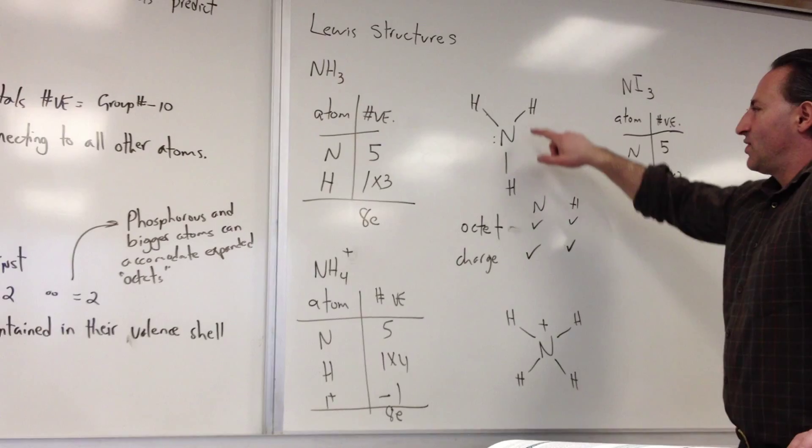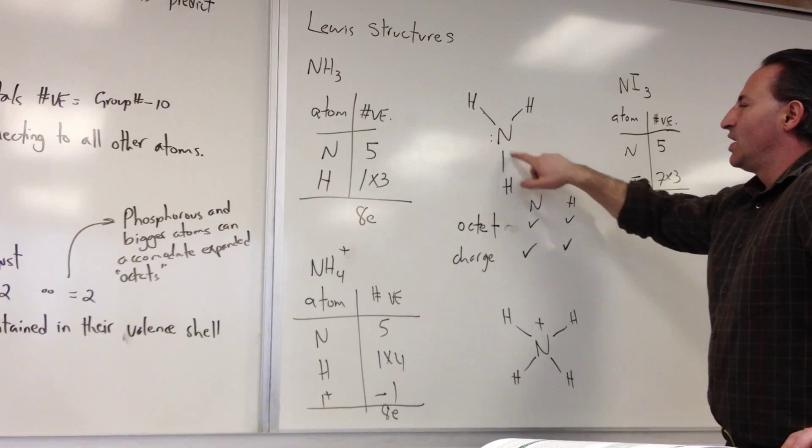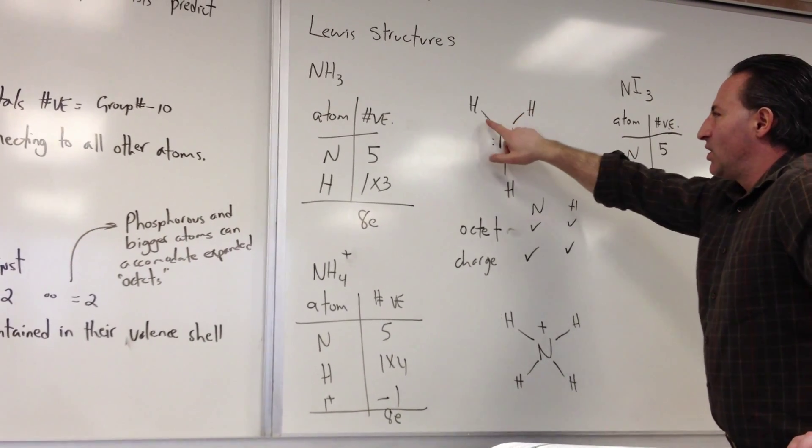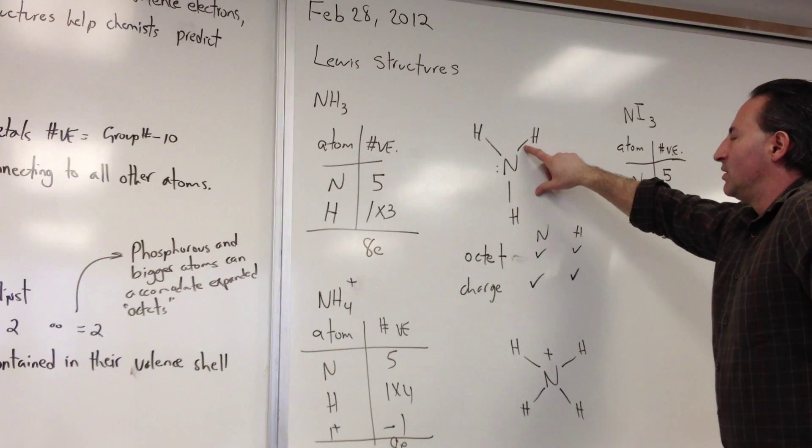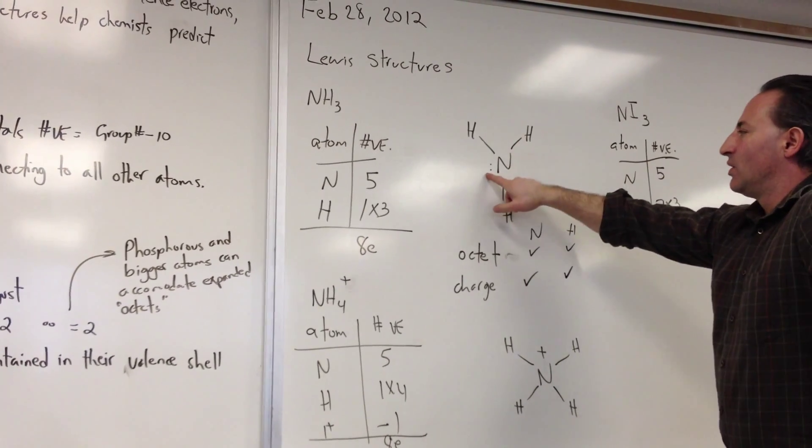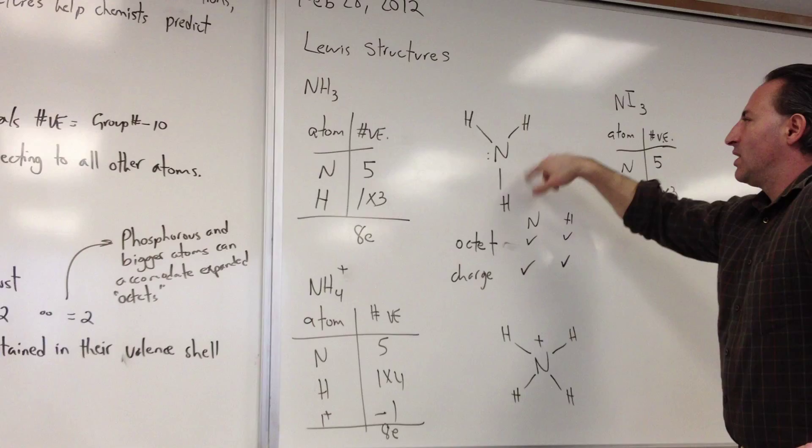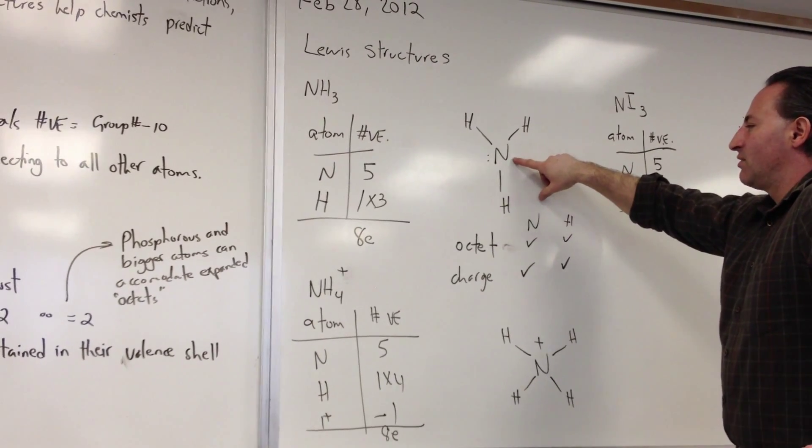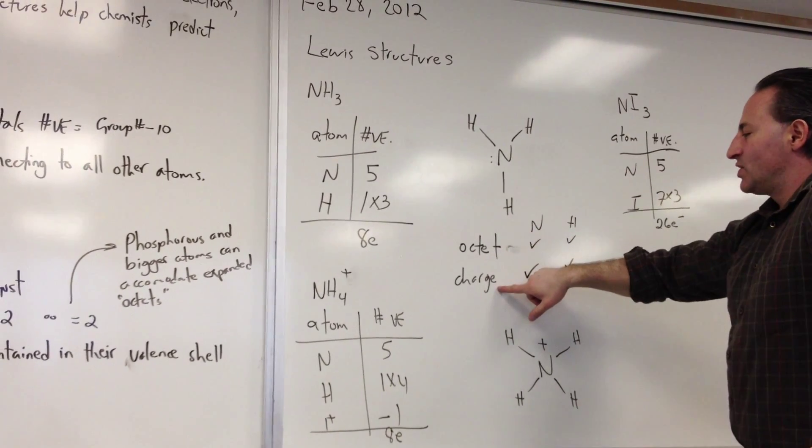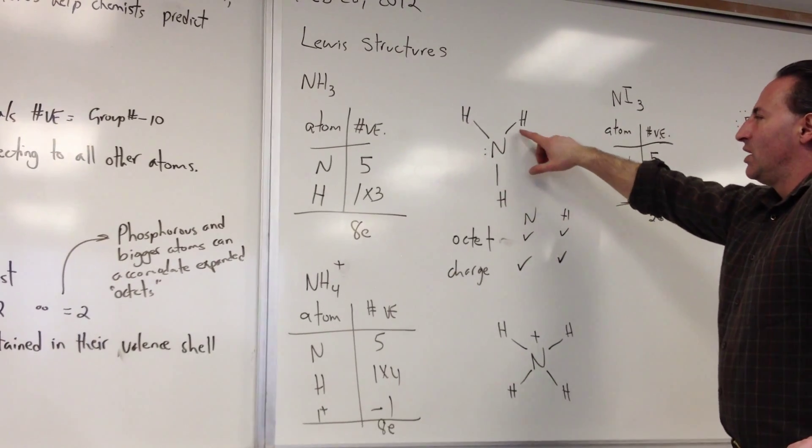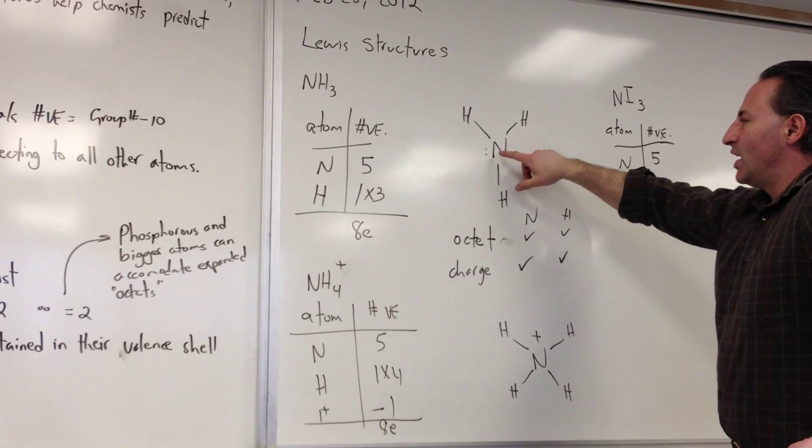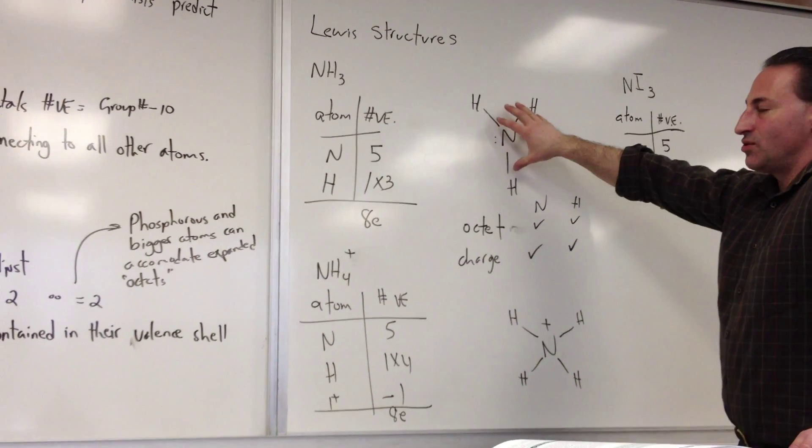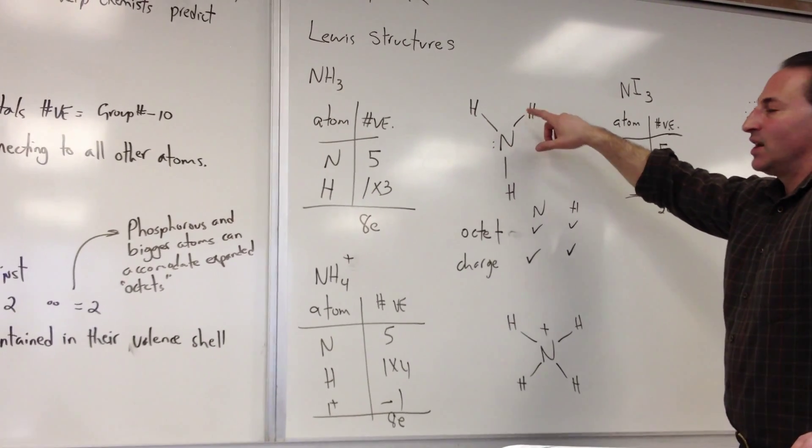Then what we do is we check for octets and the charge. The octet for nitrogen is satisfied because we have 2, 4, 6, 8. Recall that for the octet, a line is worth 2 electrons and the lone pair is worth 2 electrons as well. So there are 8 electrons in the vicinity of nitrogen. And the charge consideration is also satisfied. When you count up charges, the bonds count for 1. So nitrogen, which has 5 valence electrons, likes to have possession of 5 electrons.